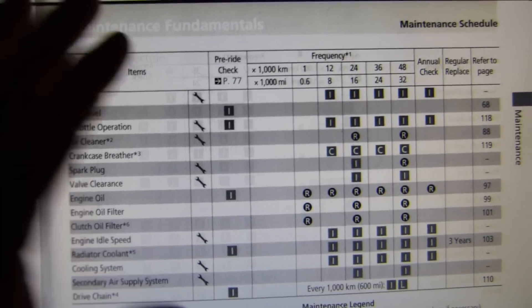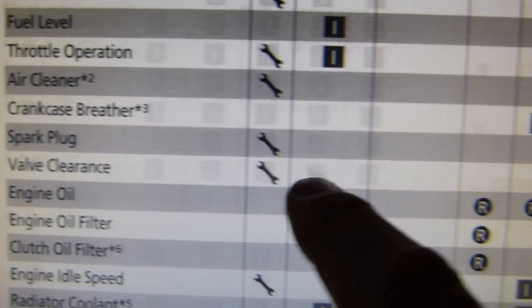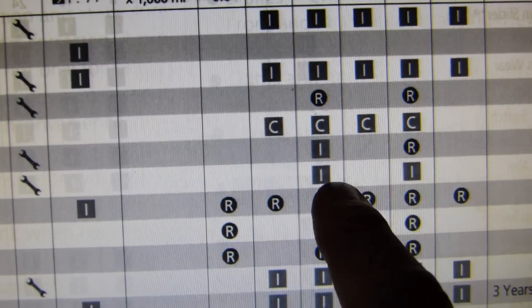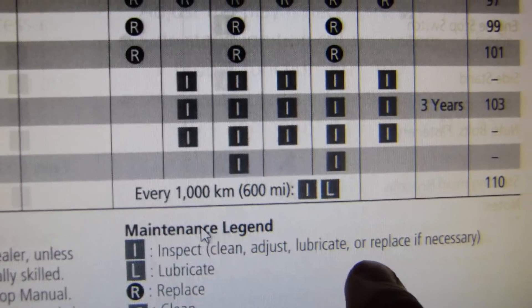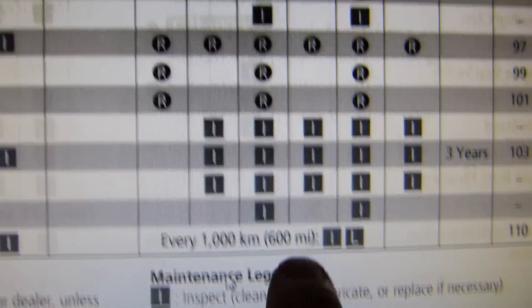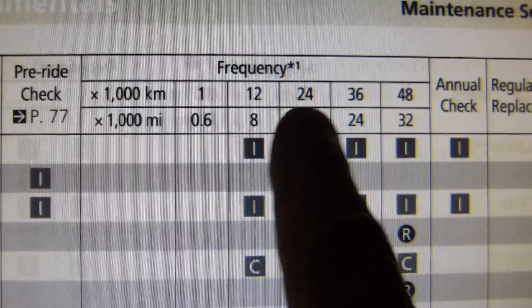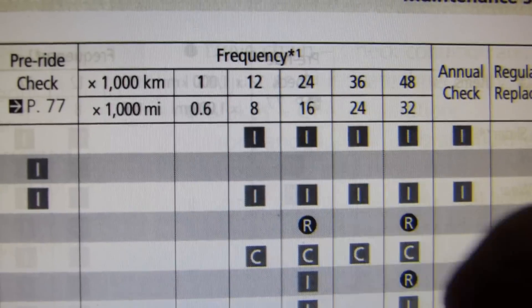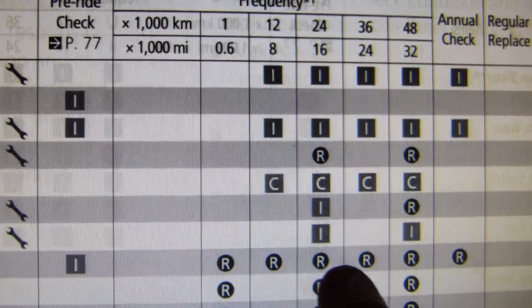Over here in the same PDF manual, you can see the maintenance schedule. Valve clearance service interval—I stands for inspect, clean, adjust, lubricate, or replace as necessary. That's inspection time. You can see that the service interval is every 12,000 kilometers or every 8,000 miles. This is how the pattern looks like.